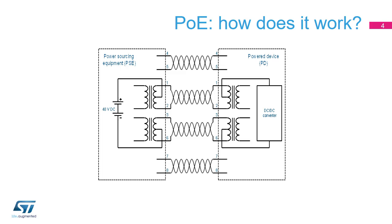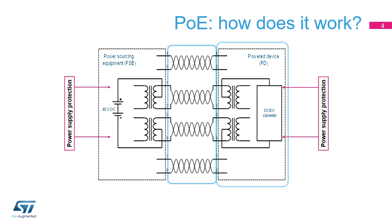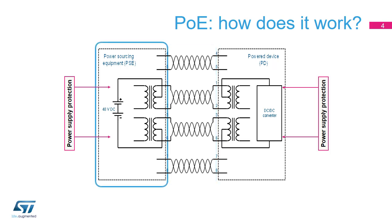POE is made of three parts. The terminal, such as a camera or an IP phone, also called the power device (PD), transmits and receives data as well as receiving power. The cable transmits both data and power — it is the same cable as standard Ethernet. The last part is the power sourcing equipment (PSE), which transmits and receives data as well as delivering power.